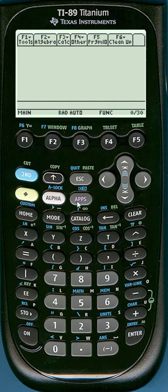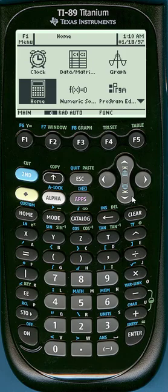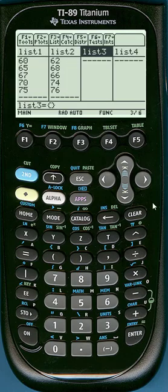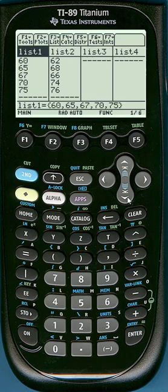From the home screen go to apps and then find the stats list editor. I've already entered two lists here, we're going to work with raw data.